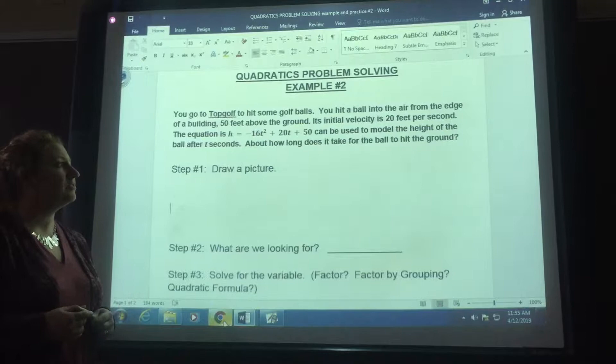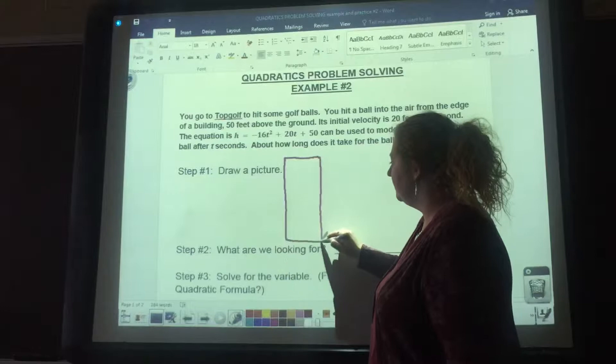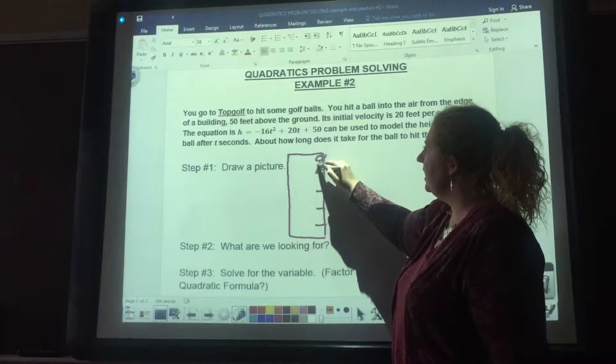Just to bring us back to where we were on Friday, I'm going to draw that picture again. We have the Topgolf building, and depending on the location, whether it's Indianapolis or Vegas or Birmingham, Alabama, each Topgolf location has different levels. Let's say that this is you, here on the fourth level, and it tells us right here that you are 50 feet above the ground.